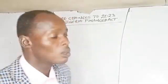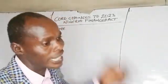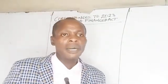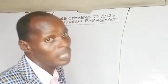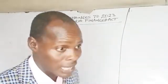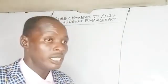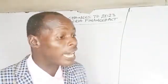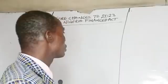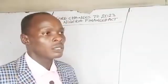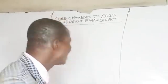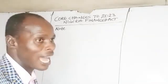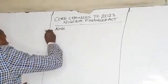In accounting, we normally make use of historical data. So in 2024, it is not possible for the examiner to give you the 2025 financial year when you are actually in 2024, unless it is a forecast financial statement. For your exam purpose, note these five core changes in the 2023 Finance Act.